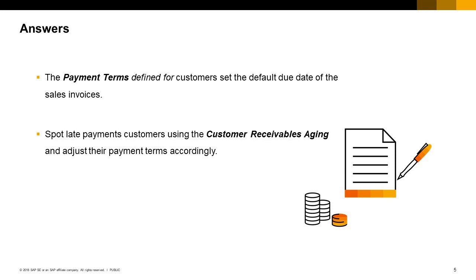Payment terms influence sales documents' due dates and expected payments. You can set default payment terms for customers and vendors in System Initialization, under General Settings on the BP tab. The default payment terms are used when you set up a new customer, but you can adjust the payment terms in a customer master to reflect the payment risk involved with that particular customer.